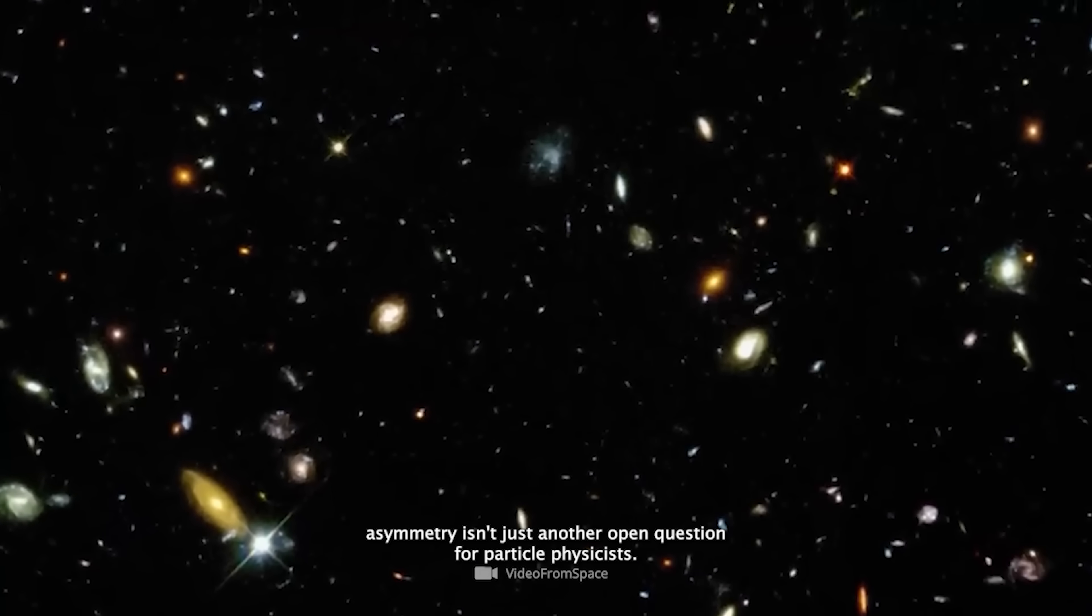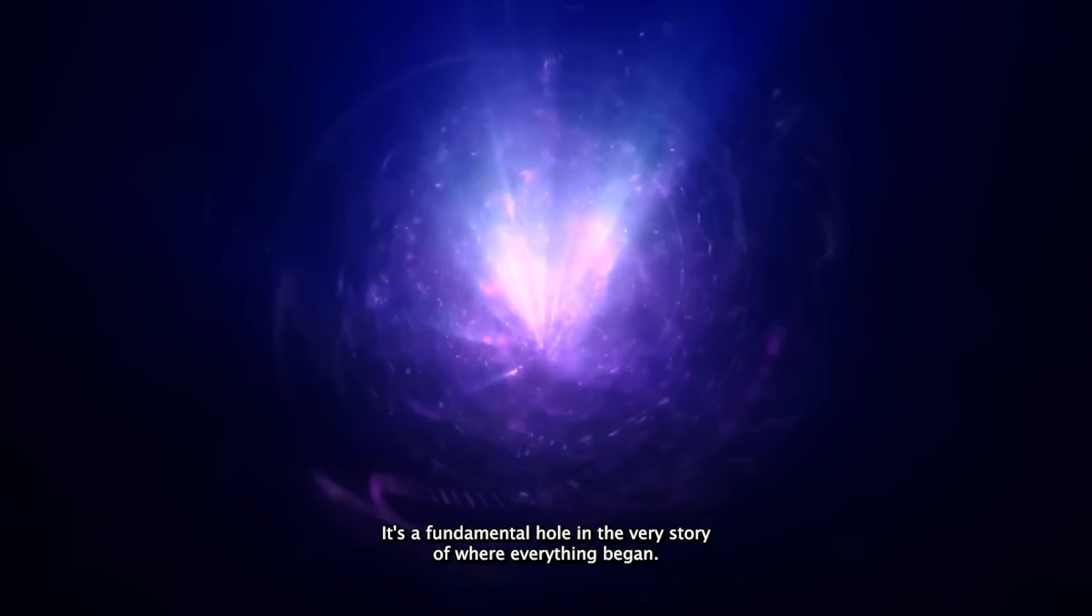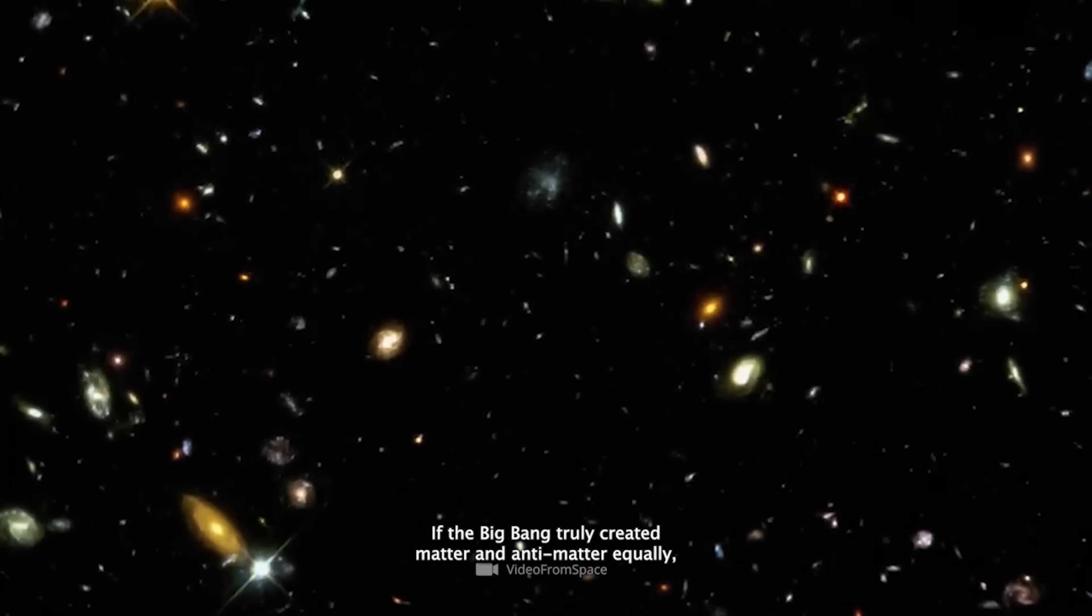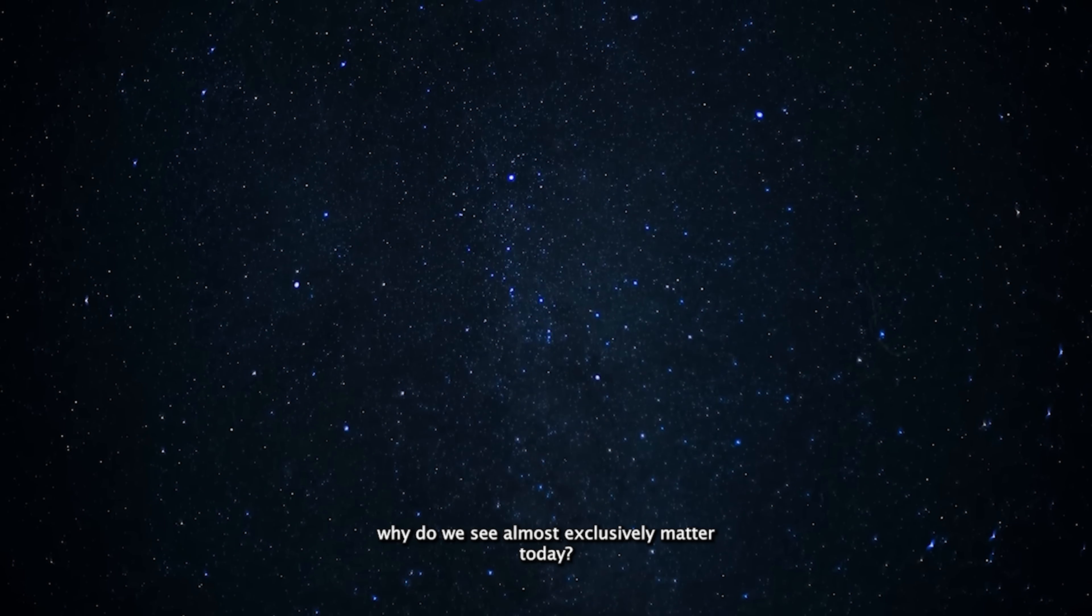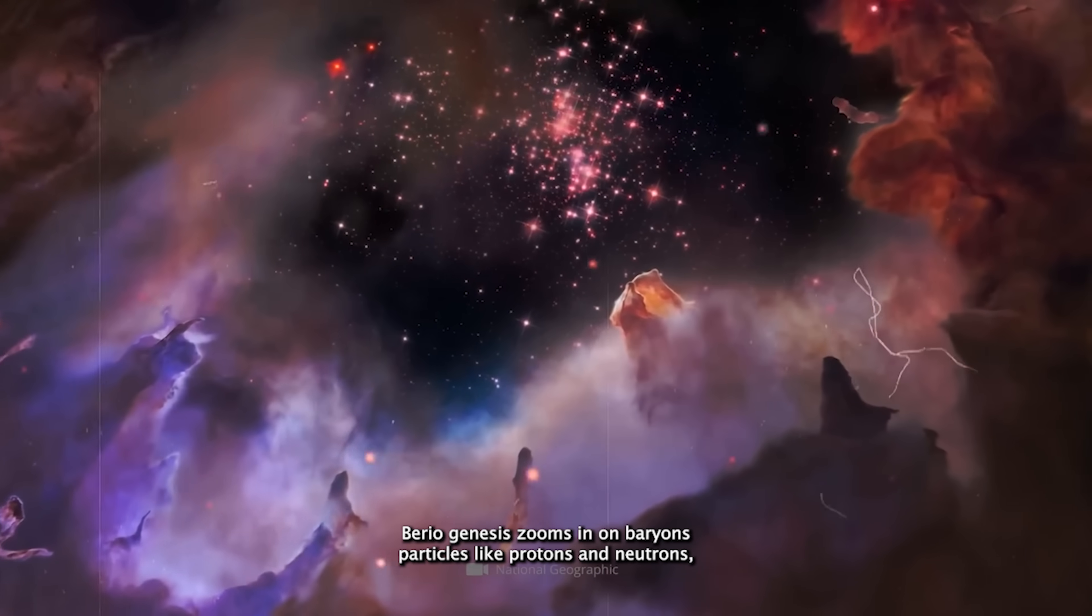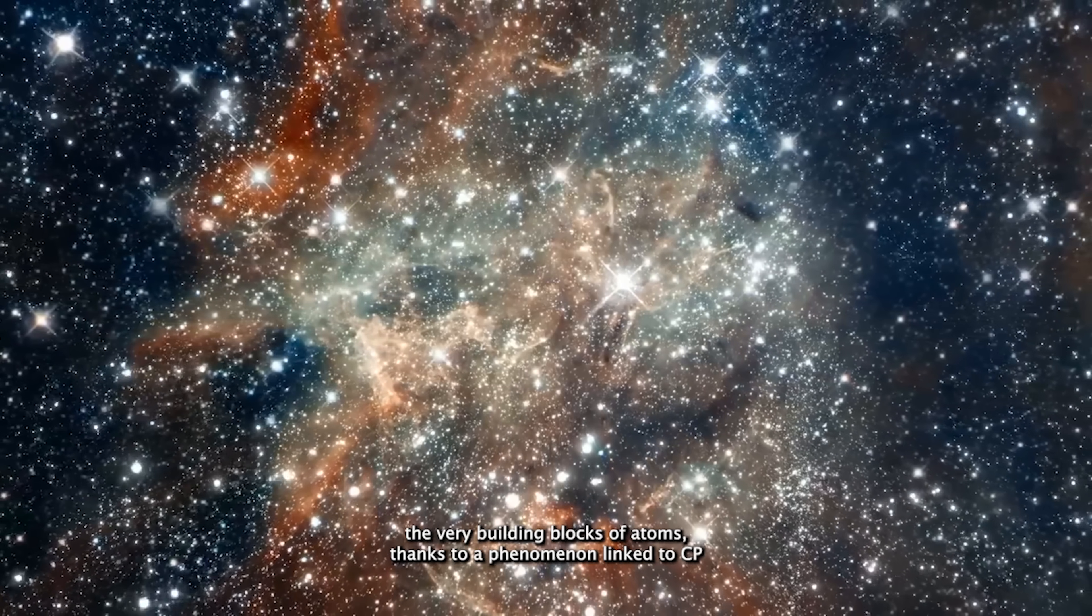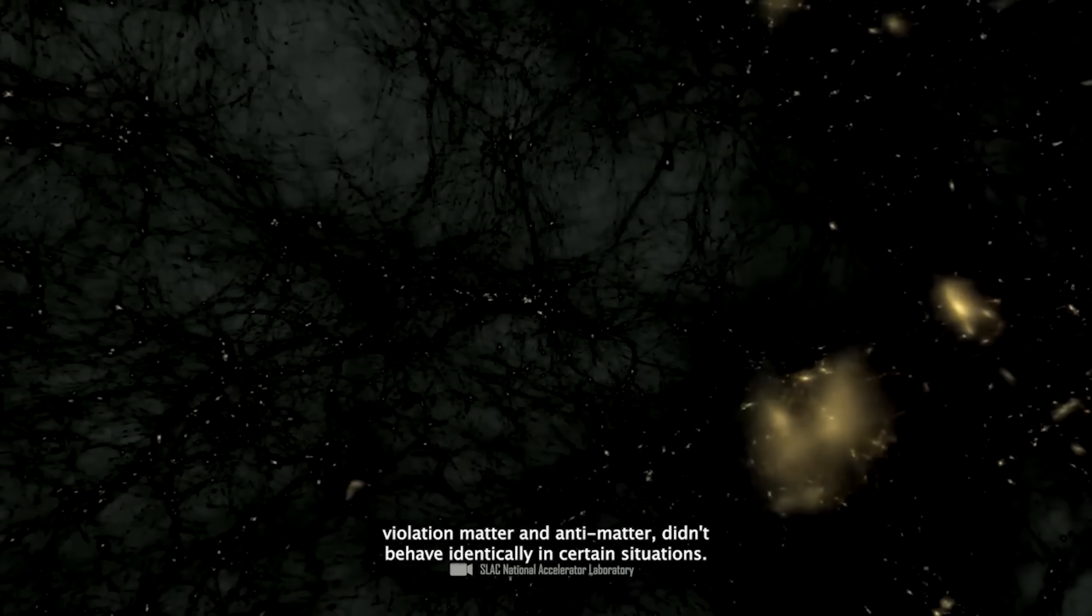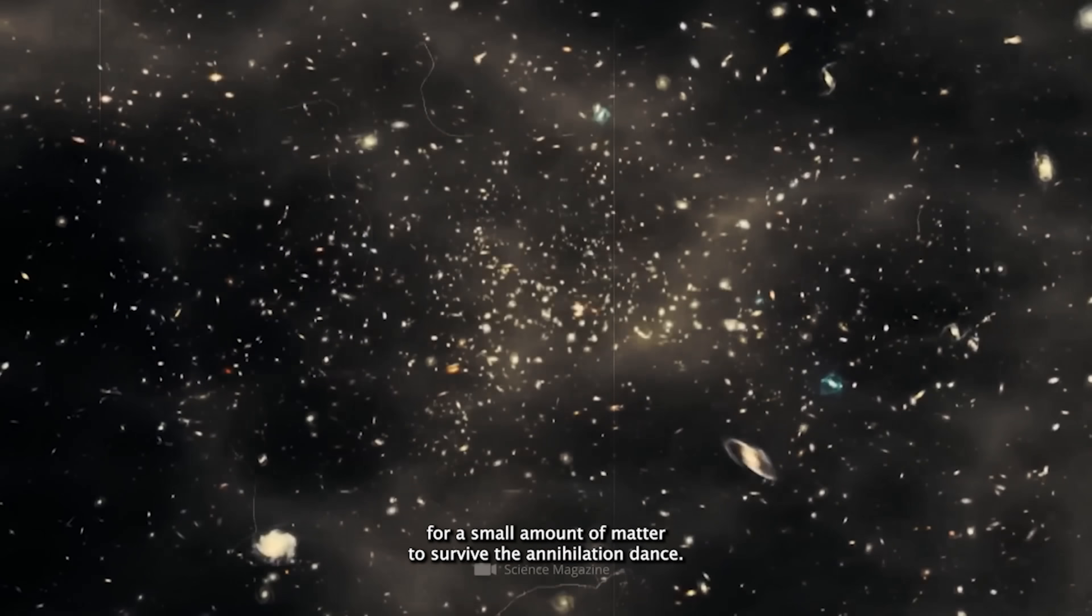The matter-antimatter asymmetry isn't just another open question for particle physicists. It's a fundamental hole in the very story of where everything began. If the Big Bang truly created matter and antimatter equally, why do we see almost exclusively matter today? Baryogenesis zooms in on baryons, particles like protons and neutrons, the very building blocks of atoms. Thanks to a phenomenon linked to CP violation, matter and antimatter didn't behave identically in certain situations. This tiny difference might have been enough for a small amount of matter to survive the annihilation dance, giving birth to the universe we know.